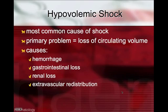Hypovolemic shock is by far the most common cause of shock we see in veterinary medicine, and the primary problem is a loss of circulating volume. Causes of hypovolemic shock can include hemorrhage, gastrointestinal loss through vomiting and diarrhea, renal loss, or extravascular redistribution.